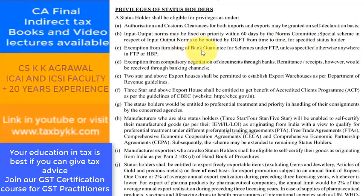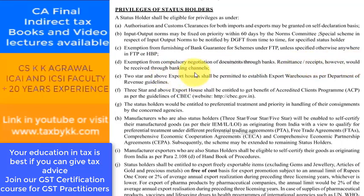Benefit 3: Exemption from furnishing of bank guarantee for schemes under FTP, unless specified otherwise in FTP or HPV. Benefit 4: Exemption from compulsory negotiation of documents through banks; remittances and receipts however would be received through banking channels. Benefit 5: Two star and above export houses shall be permitted to establish export warehouses as per Department of Revenue guidance.